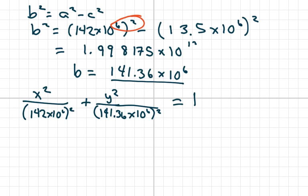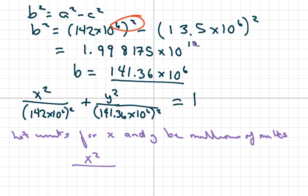And if you want to simplify by letting our units for X and Y be millions of miles. So basically, if you do that, you'll get X squared over 20,164 plus Y squared over 19,981.75 equals 1.